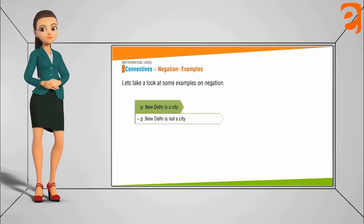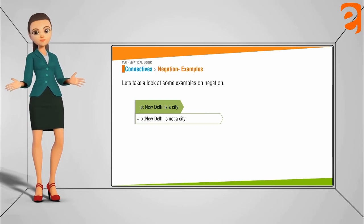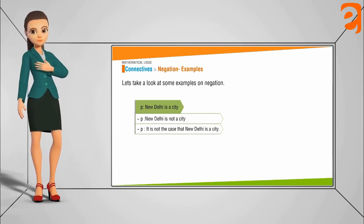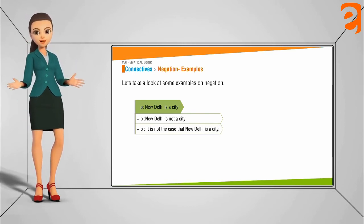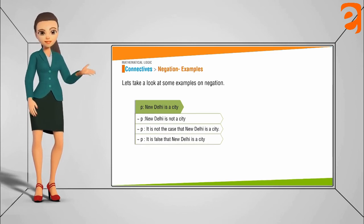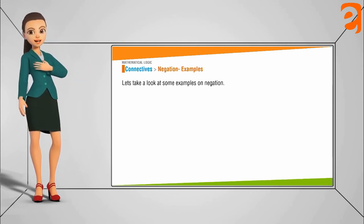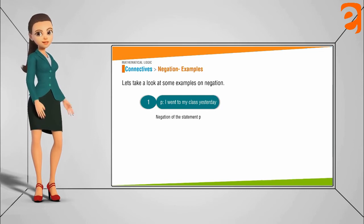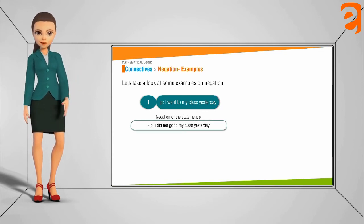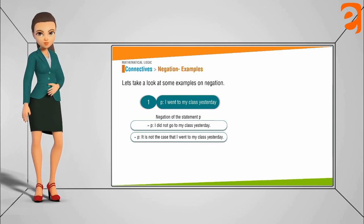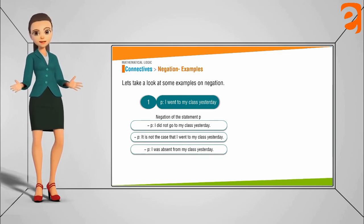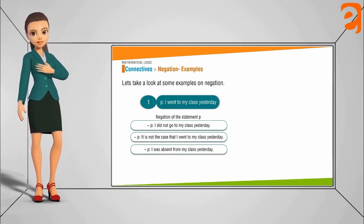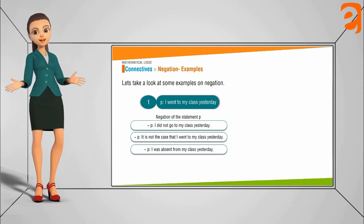Examples of negation: 'New Delhi is a city.' Its negation is 'New Delhi is not a city', or 'It is not the case that New Delhi is a city', or 'It is false that New Delhi is a city.' Another example: 'I went to my class yesterday.' The negations are: 'I did not go to my class yesterday', 'It is not the case that I went to my class yesterday', or 'I was absent from my class yesterday.' All three express the opposite meaning of the original statement.